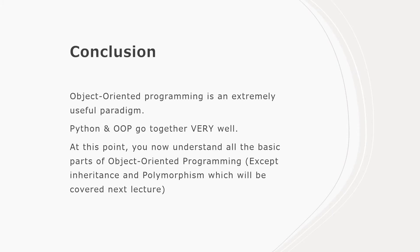This brings us to the end of our theoretical OOP lecture. Throughout this video we showed that OOP is an extremely useful paradigm and how Python and OOP really go well together and how important they are to each other. At this point you pretty much understand all the basic parts of OOP, with the exception of inheritance and polymorphism, which will be covered in the next lecture. This lecture's main goal was to go into the theory behind OOP — that's why there weren't any live coding segments, just pre-written code segments. If you want to see some OOP live coding, watch the previous lecture video which goes really in-depth into OOP code. This lecture was meant to provide as much context and theory as possible so you understand OOP at a much deeper and fundamental level.